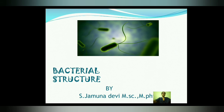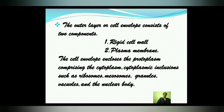Today we are going to discuss about bacterial structure. The bacterial structure — that is, the outer layer or cell envelope — consists of two components: the rigid cell wall and plasma membrane. The cell envelope encloses the protoplasm, comprising the cytoplasm and cytoplasmic inclusions such as ribosomes, mesosomes, granules, vacuoles, and the nuclear body.